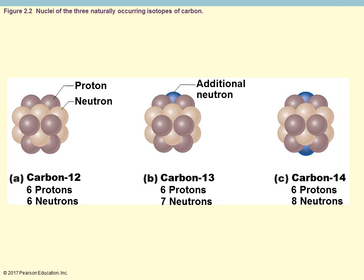An example of isotopes is carbon. Normal naturally existing carbon is carbon-12, with six protons and six neutrons. Carbon-13 is an isotope because it has an additional neutron — seven neutrons instead of six. Carbon-14 has two additional neutrons, giving a total of eight. Both carbon-13 and carbon-14 are isotopes of carbon-12, meaning they simply have a different number of neutrons.